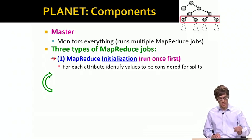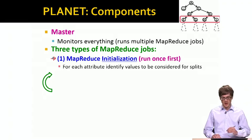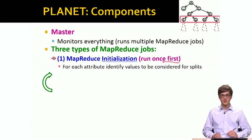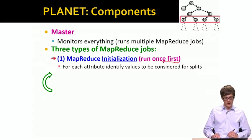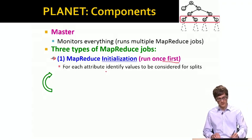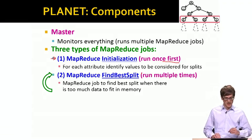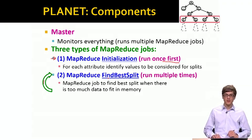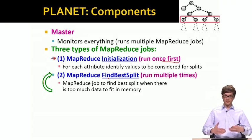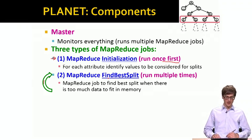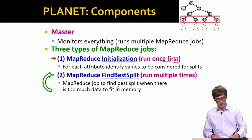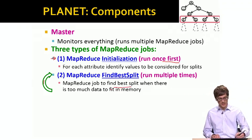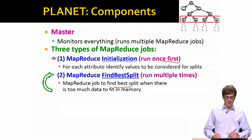First is the MapReduce job that we call initialization. We call this once at the beginning of the building procedure. Basically the idea here is for each attribute to identify values to be considered for splits. Then we will have a sequence of MapReduce jobs that are basically finding the best splits. We have one MapReduce job for every level of the tree. Here the idea is that we want to find the best split when there is too much data to fit in memory.